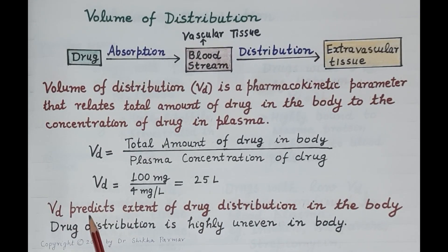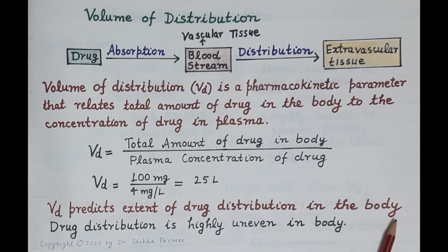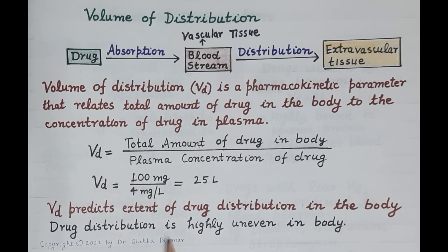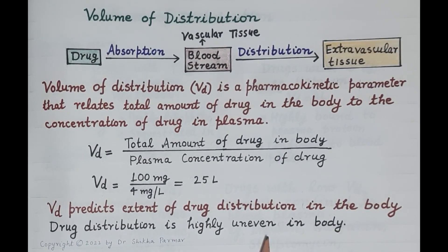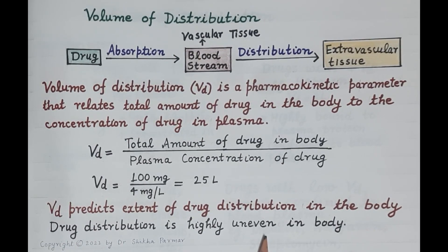Volume of distribution predicts the extent of drug distribution in the body — that is, how much drug will remain in plasma and how much will be distributed to extravascular tissues. Drug distribution is a highly uneven concept because different tissues have different affinities to drugs, and there are a number of factors on which distribution of a drug depends.